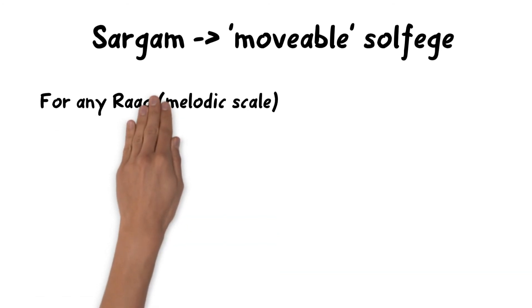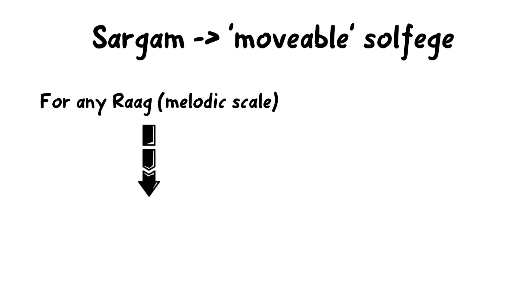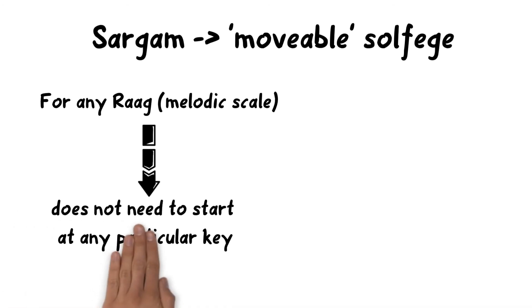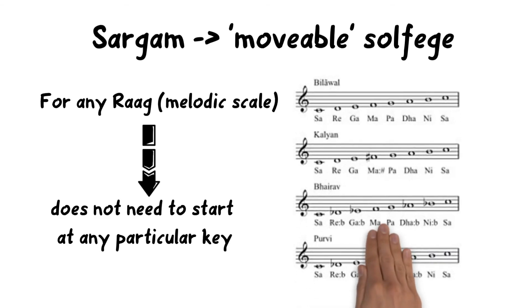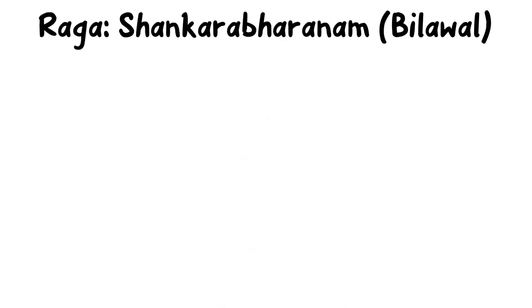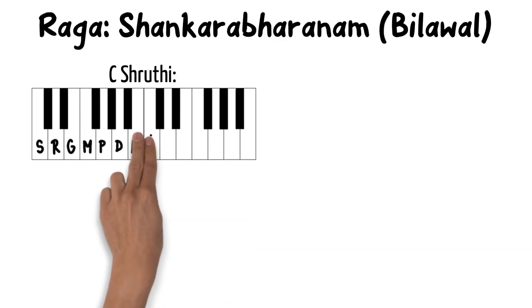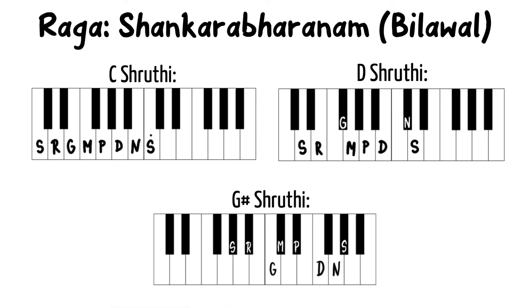The Sargam, on the other hand, is a movable solfège. The first note Sa does not necessarily have to start at any particular key — it could start from C, F, A, G sharp, E flat, etc. The successive notes of the raga are then placed with reference to the position of Sa. For example, here is the Shankarabharanam shown in three different shrutis: C, D, and G sharp shruti.